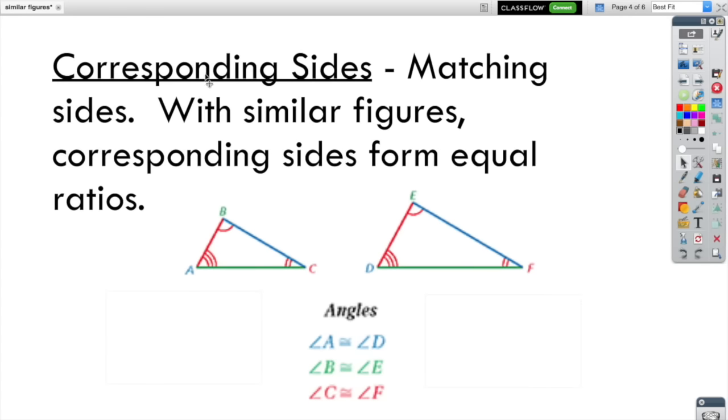Now what has changed though, since the sizes don't have to be the same, is the corresponding sides. Corresponding sides still means matching sides, so side AB here would match with side DE and so on and so forth. But with similar figures they're not the same, but we do get equal ratios.